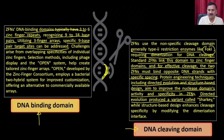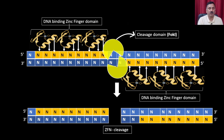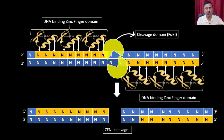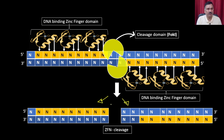Directed evolution produced a variant called Sharkey, while structure-based design enhances cleavage specificity by modifying the dimerization interface. In a typical ZFN, three or four zinc finger domains recognize a particular stretch of nucleotides. The zinc finger cleavage domain then binds the opposite side of the DNA and cleaves it, producing two parts. These parts then participate in DNA repair, ultimately leading to genome editing.